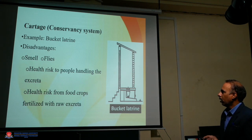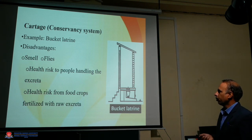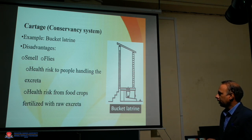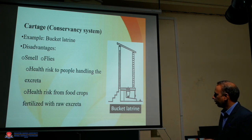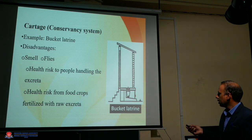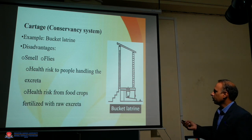An example of service type latrine is the bucket latrine. The disadvantages of bucket latrine include: smell, production of flies, health risks to people handling the excreta, and health risks from food crops fertilized with raw excreta. These are the disadvantages of the bucket latrine, which comes under the service type latrine.